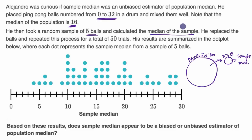And then he replaced the balls and repeated this process for a total of 50 trials. His results are summarized in the dot plot below, where each dot represents the sample median from a sample of five balls.